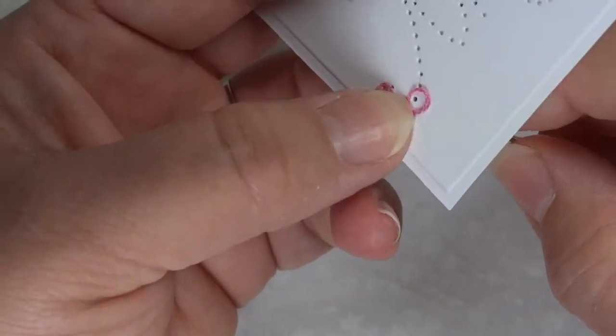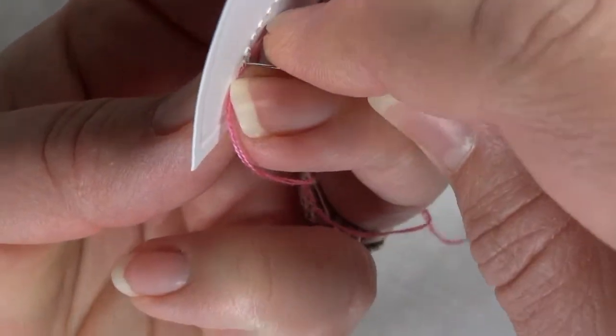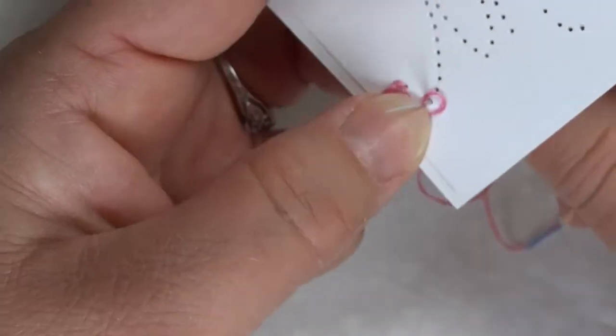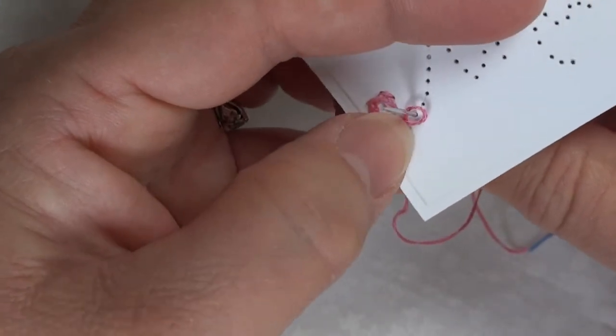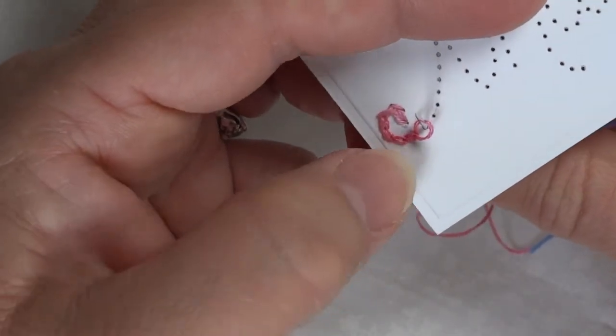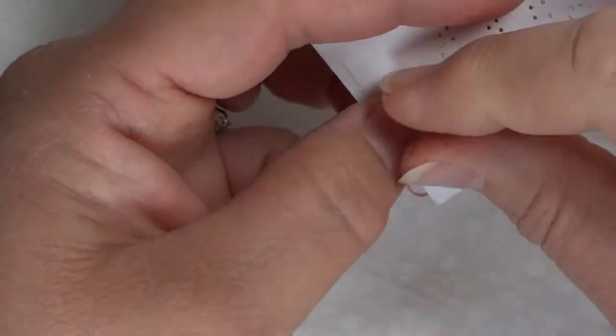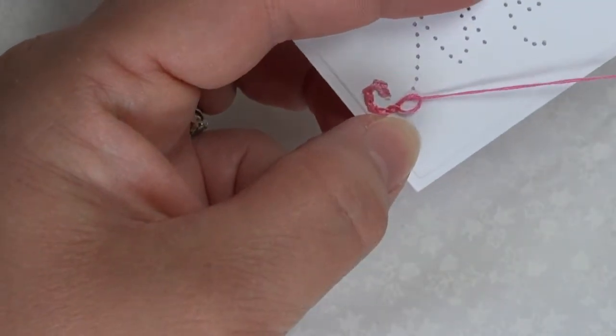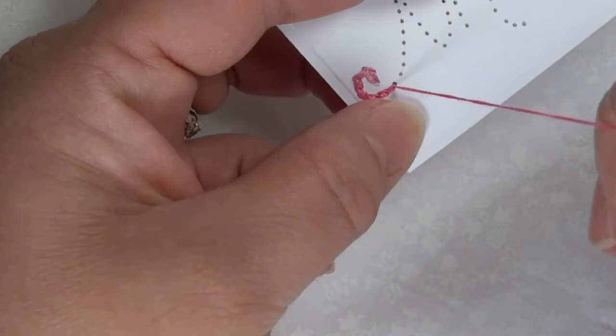Then from the bottom, you may have to flip it over like I do to see, you come in from the bottom into the next hole. Then pull your thread through and tighten.